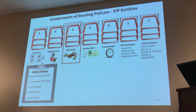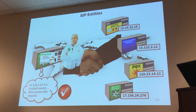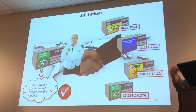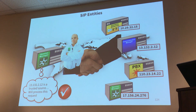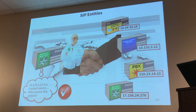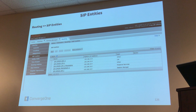SIP entities sit here in step four, right after adaptations and right before entity links. Remember that Session Manager receives a request and it only trusts that request if it's coming from a SIP entity. Otherwise it pretty much rejects the request. Also remember that even your Session Manager itself is defined as a SIP entity — specifically the SM100 is what's defined as a SIP entity. You go to the routing menu and that's where you create SIP entities.